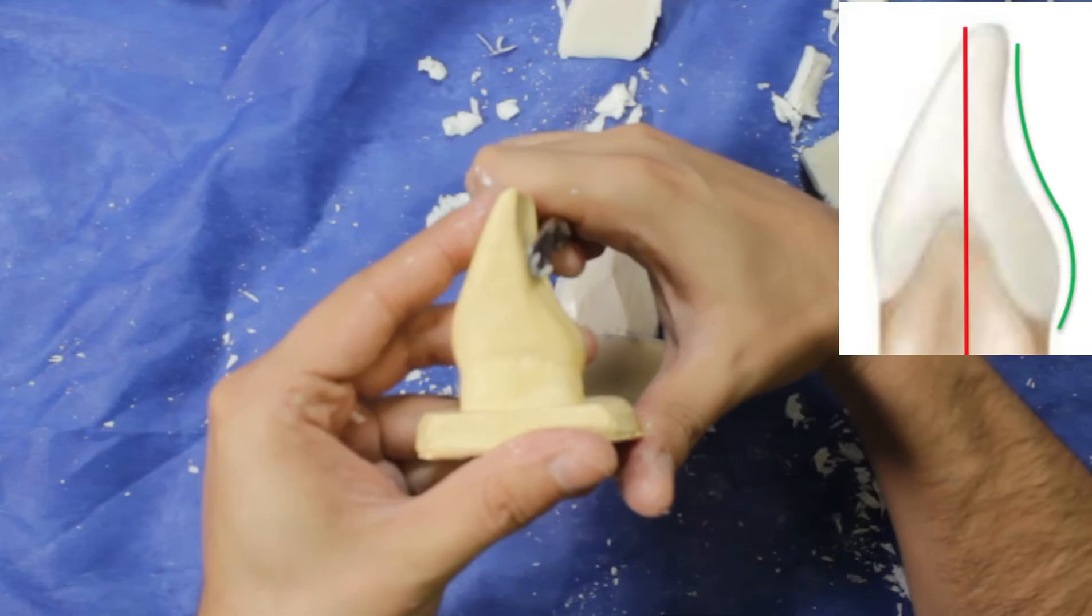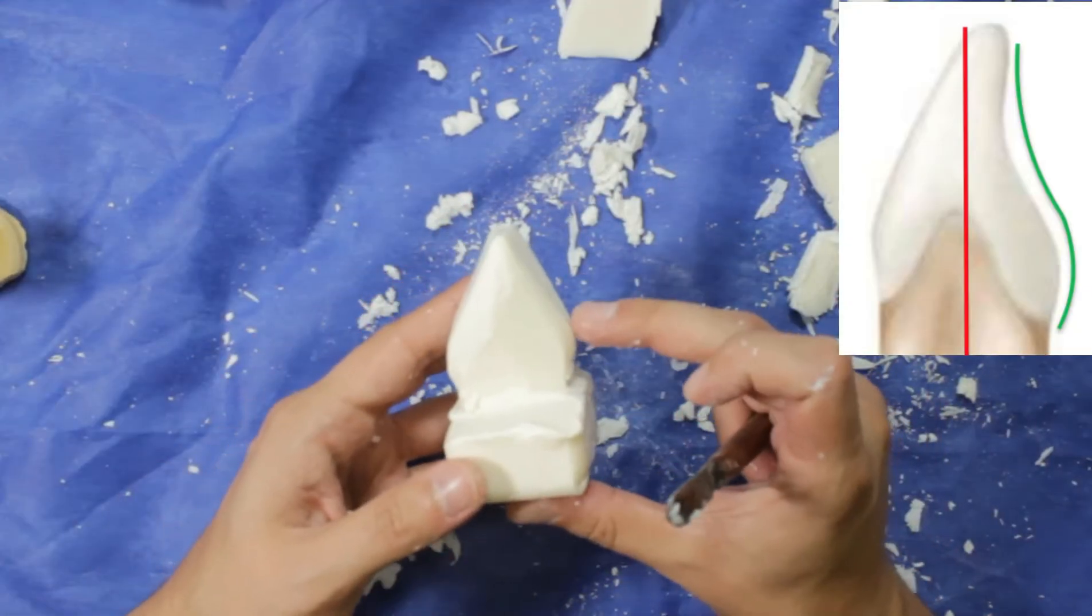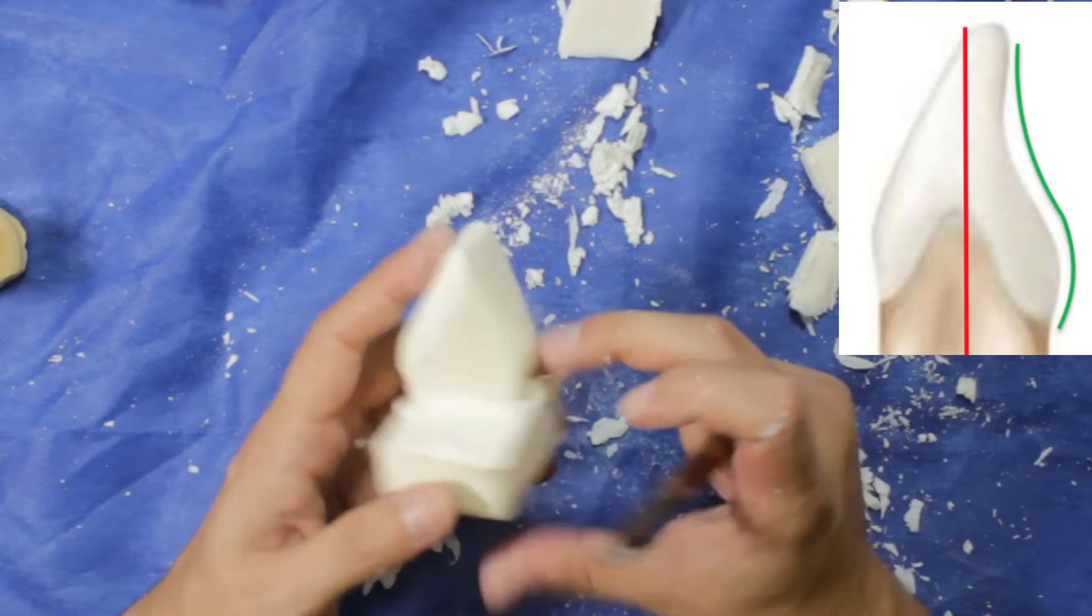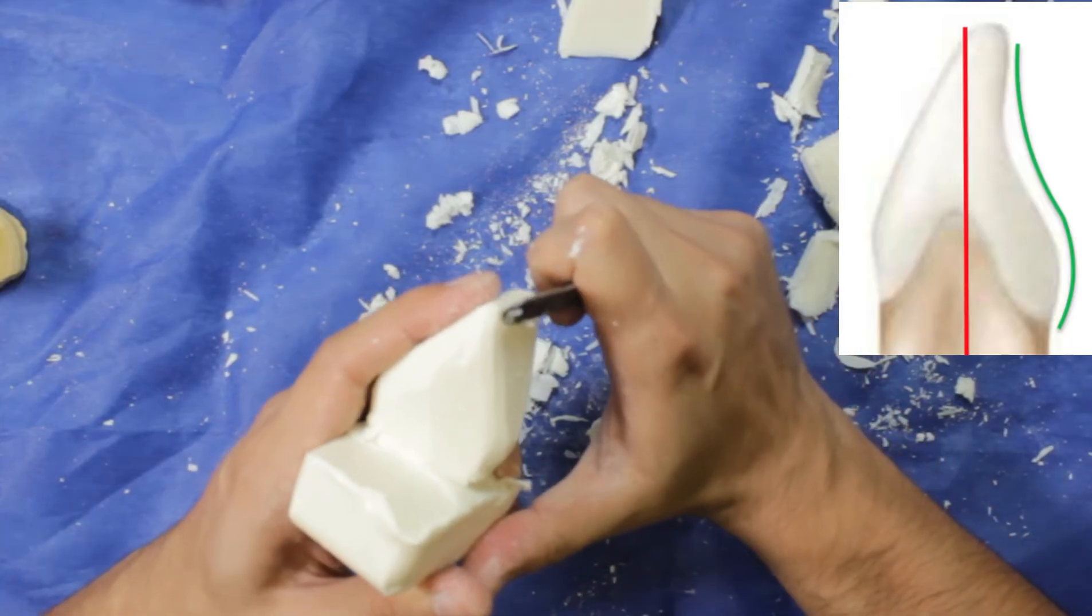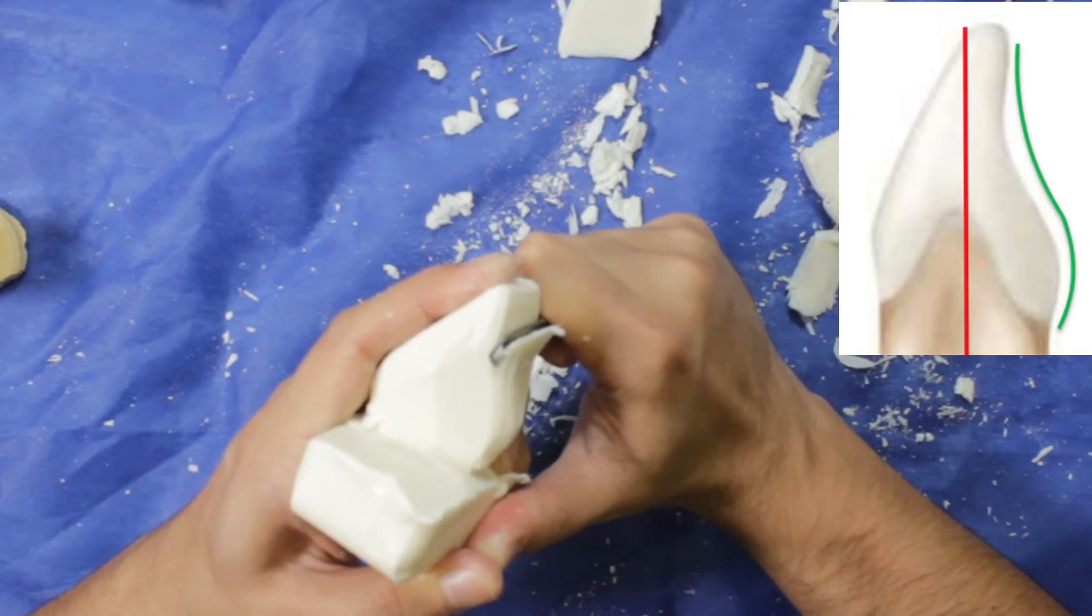Probably the hardest part is the lingual face, so be careful while cutting. In mandibular central incisors, the cingulum is slighter than the maxillary central incisors.